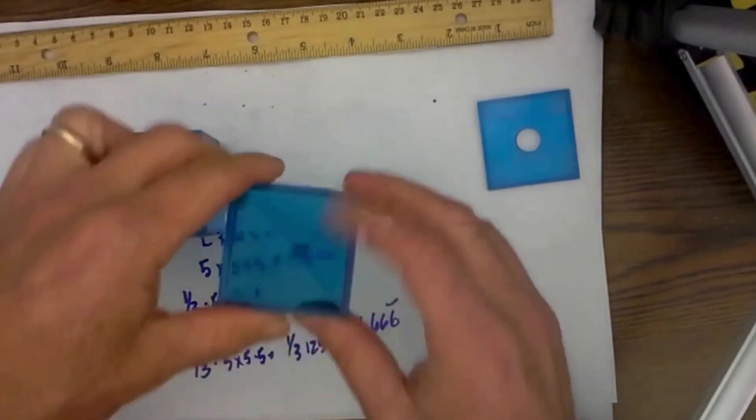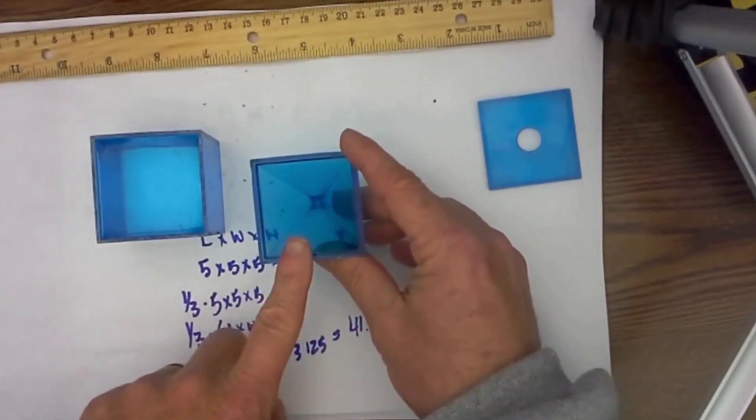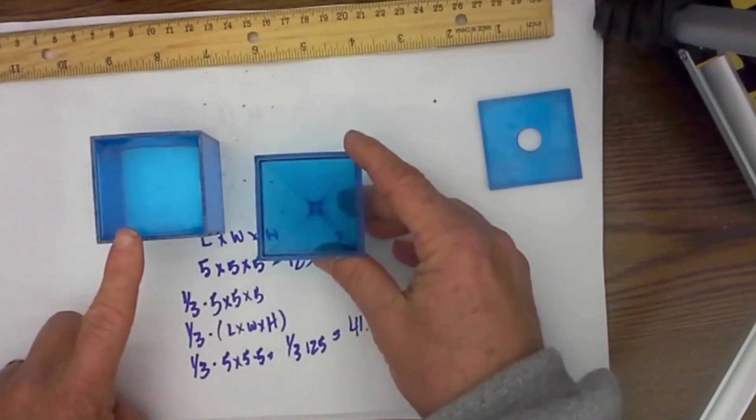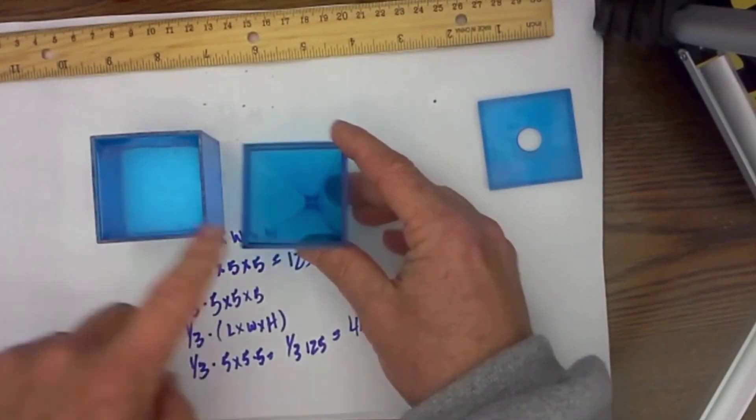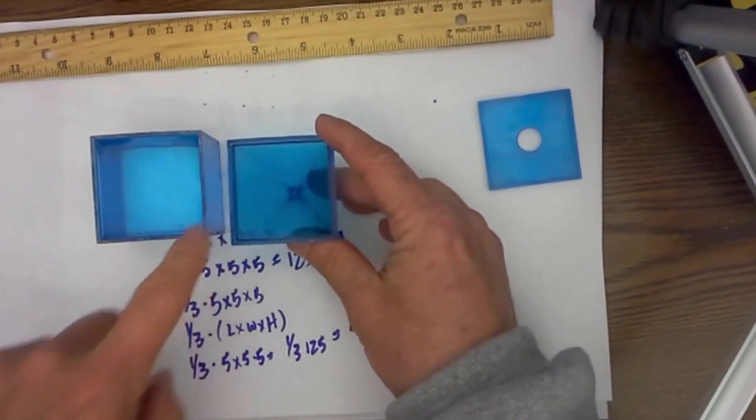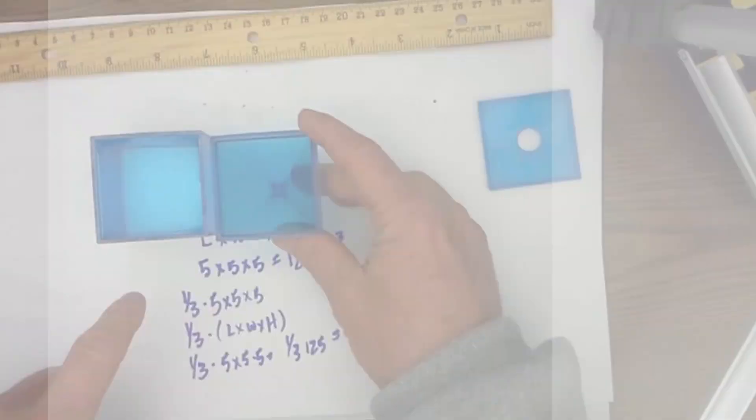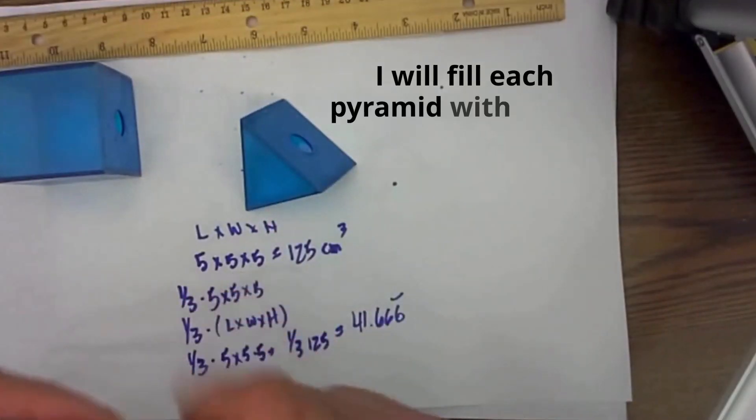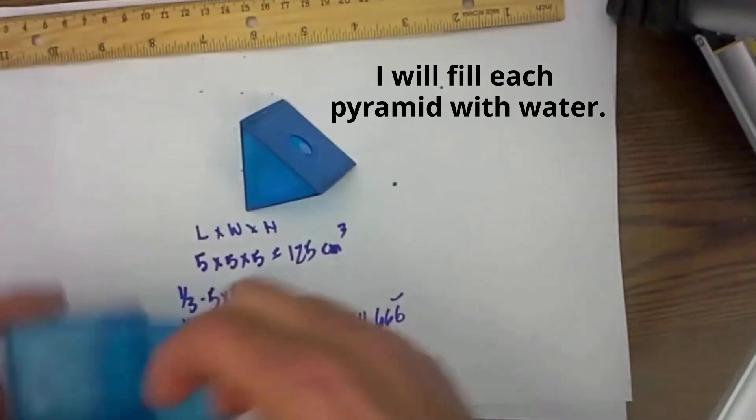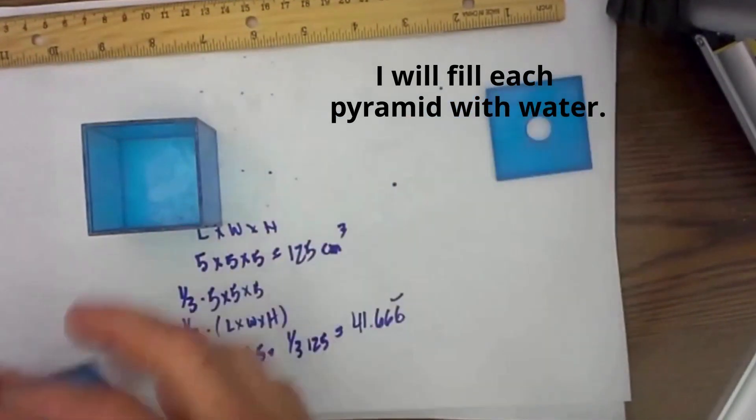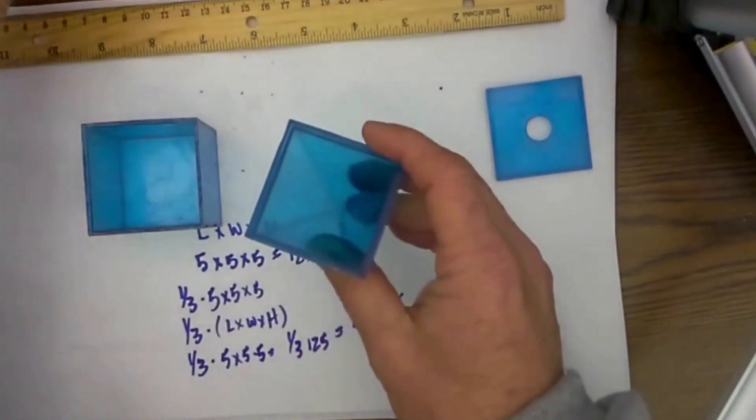The formula: it takes three of these to fill up one prism that has the same size base and is the same height with water, and they should fit exactly into this container. So let's see how it goes.